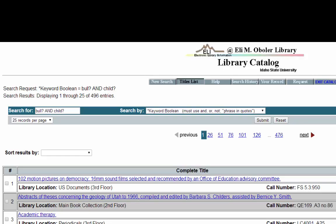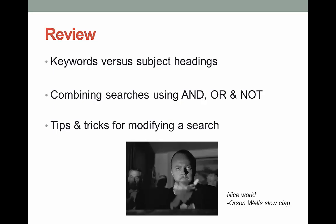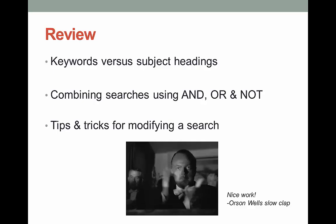Now I don't expect you to master the concept of Boolean and truncation right away. We're going to be playing with both of these concepts the rest of the semester, so there's going to be plenty of time to practice. To review: after this week I want you to be aware of keyword and subject heading searches — including what they are, how to do them, and how they differ. I also wanted to introduce you to the concept of Boolean searching and how these words can help with your search. So, do you feel like you can search like a boss now or what?